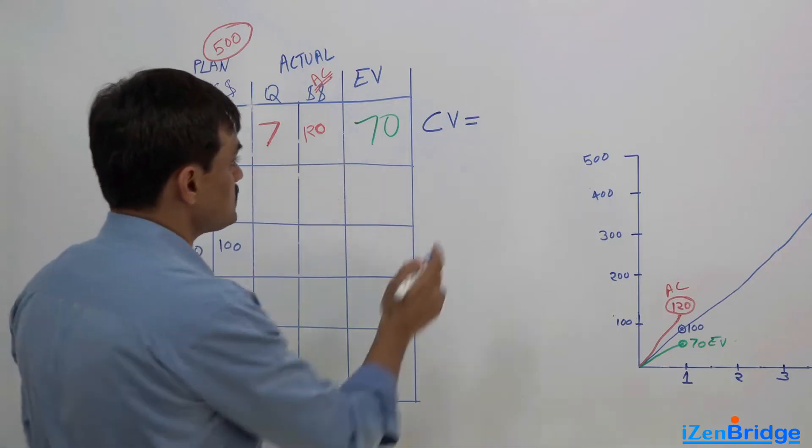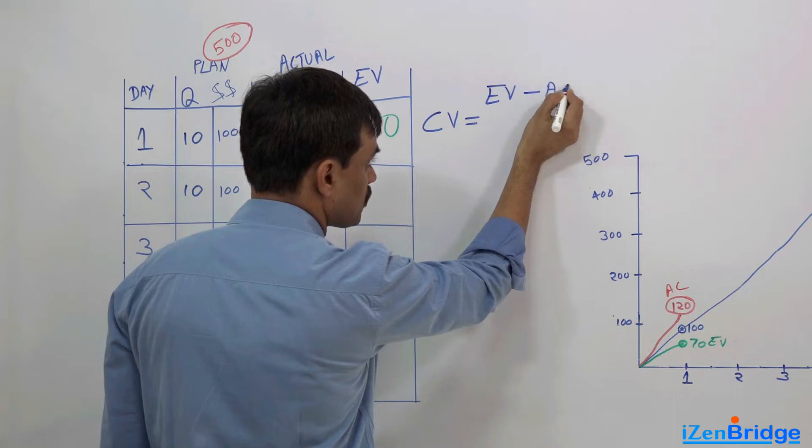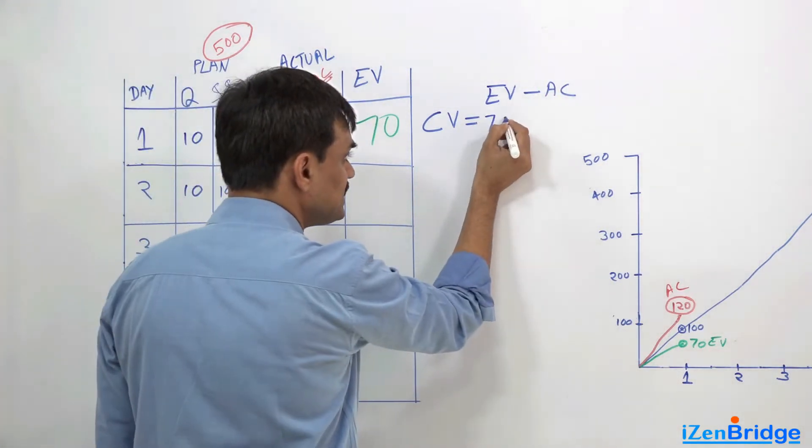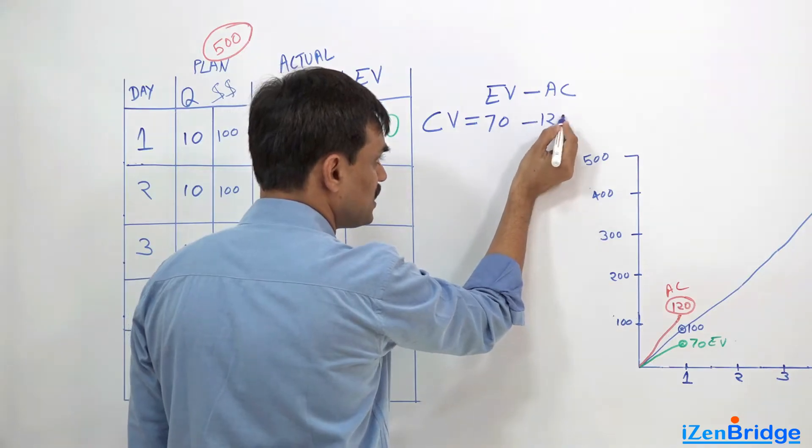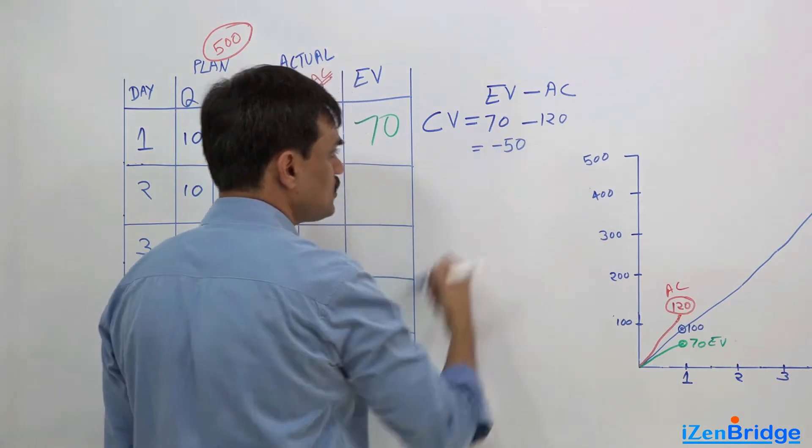So, the first thing as a formula is earned value minus actual cost, and that makes sense as well. We earned 70 and we spent 120. For this particular case, cost variance was minus 50.